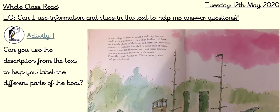You'll need a pen or a pencil and a piece of paper. Write today's date, which is Tuesday the 12th of May 2020, and underline it please. Our 'Can I' question for today is: can I use information and clues in the text to help me answer questions?